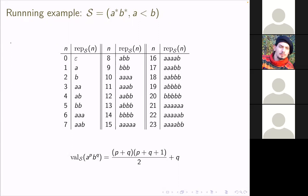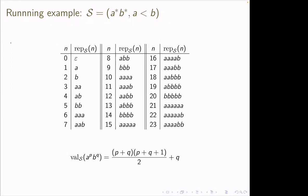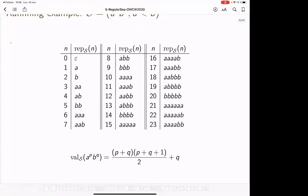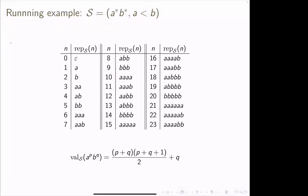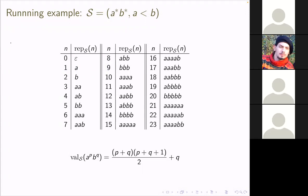In this example, words of the language are ordered length by length — first the empty word ε, then words of length one (a and b), then length two, and so on — with lexicographic order within each length. For example, 17 is represented by the word aabbb. For an arbitrary word a^p b^q in the language, one can compute its value by a simple closed formula.